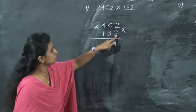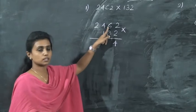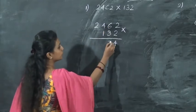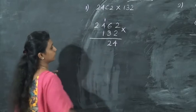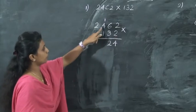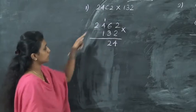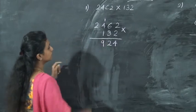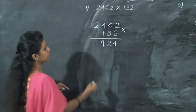Next, 2 sixes are 12. Write 2 here and 1 is carried over. Then 2 fours are 8 plus 1 carried over comes 9. Then 2 twos are 4.